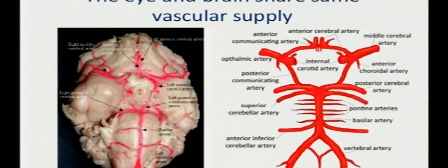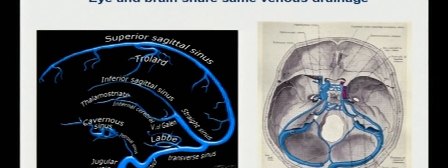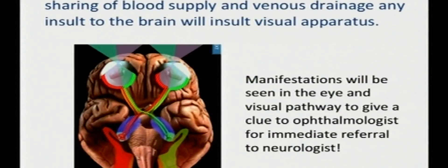The eye and the brain share the same vascular supply as well as the venous drainage. Because of the anatomical close relationship and sharing of blood supply and venous drainage, any insult to the brain will insult the visual apparatus. Manifestations will be seen in the eye and visual pathway to give a clue to the ophthalmologist for immediate referral to neurologist. In certain neurological conditions, both the ophthalmologist as well as the neurologist have to work in liaison with each other.